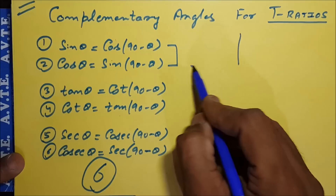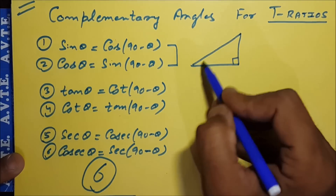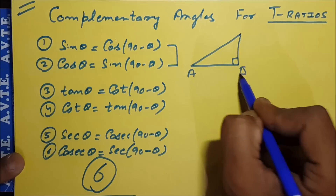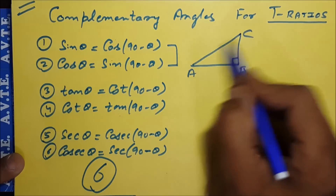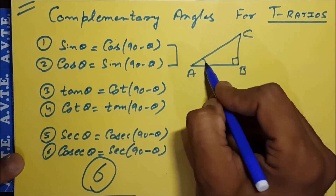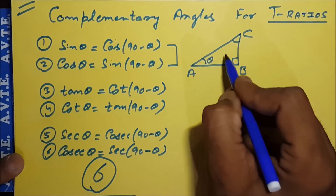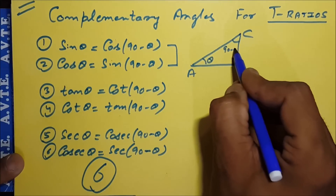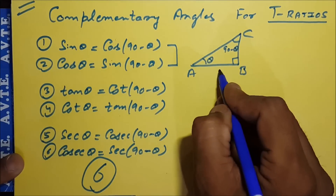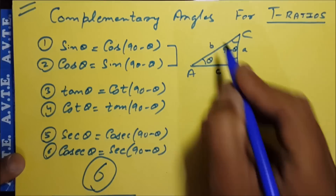Here you see there is a right angle triangle ABC, with a right angle at B and two acute angles A and C. Let me mark one angle as theta and the other as 90 minus theta. The sides are labeled small c, small a, and small b.